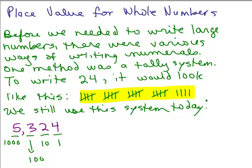So we have 5,000, 300, 2 tens, and 4 ones.